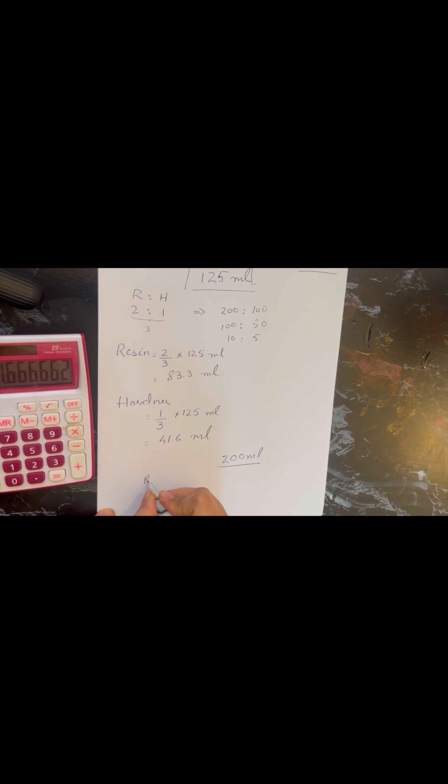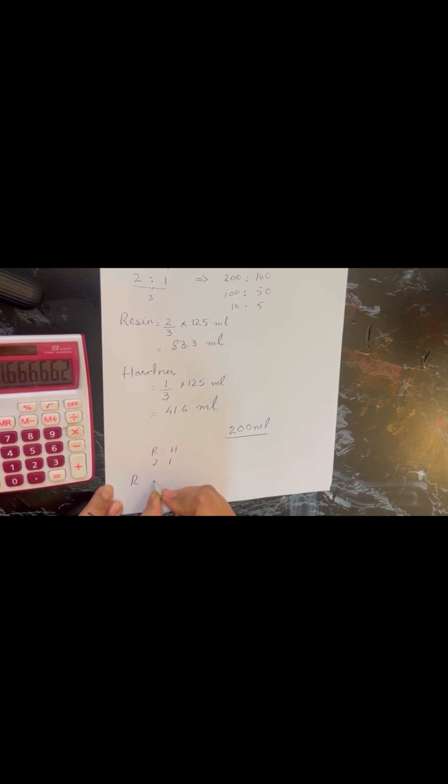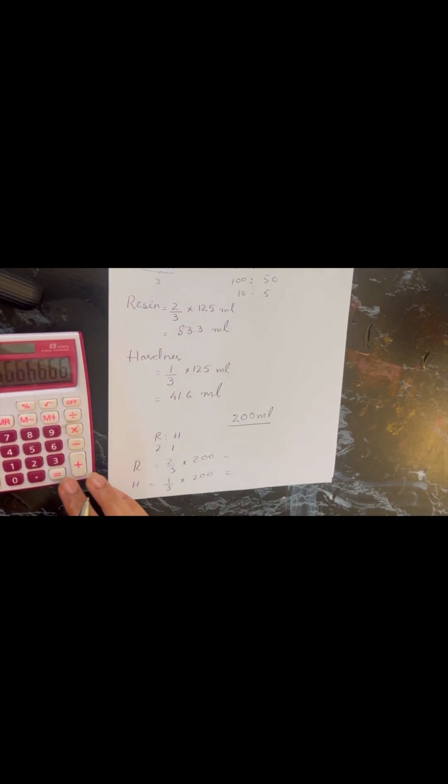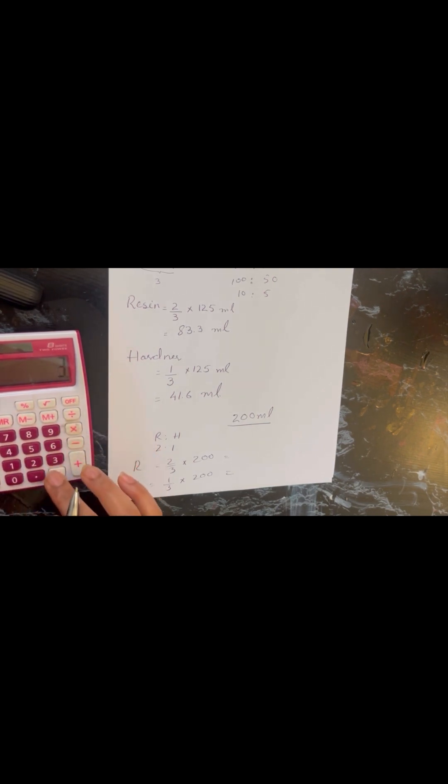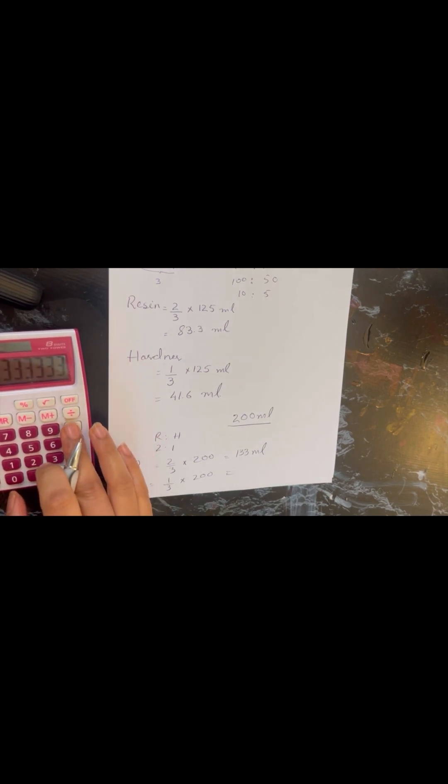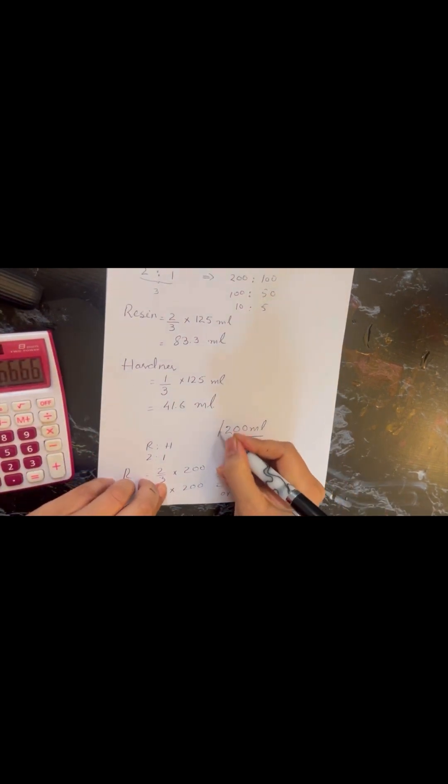Now let's say if we have 200 ml of resin that we want to make for our project and it's 2 ratio 1. So now we will calculate the resin in the same manner: 2 by 3 times 200, and hardener 1 by 3 times 200. And now you can easily calculate or you can find the breakup of 200 ml into the resin and hardener without any failure. So for 200 ml we will be pouring 133 ml of resin and 66.6 ml of hardener, and you can round it off as 67 ml. So this is simple.